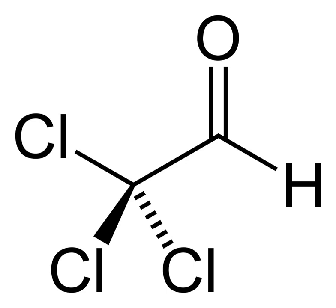Treating chloral with sodium hydroxide gives chloroform (Cl3-CCH) and sodium formate. Cl3-CCHO plus NaOH gives Cl3-CCH plus sodium formate. Chloral is also easily reduced to trichloroethanol, which is produced in the body from chloral.